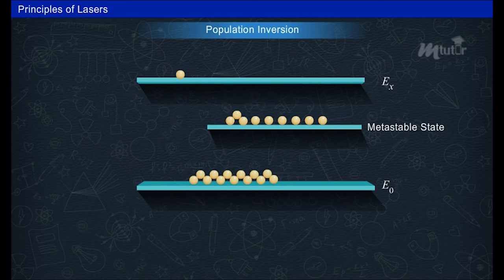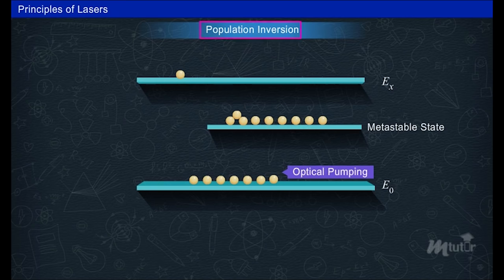But in order for more photons to be emitted, there should be more electrons in the excited state. This process is achieved through optical pumping and this occurrence is known as population inversion.